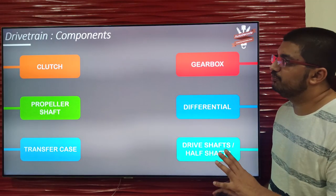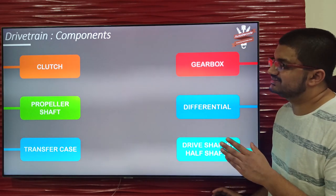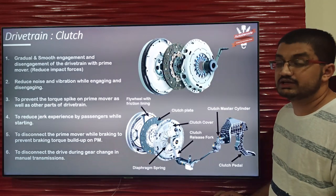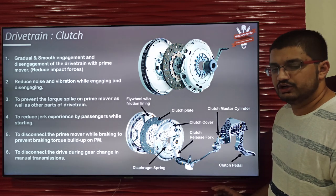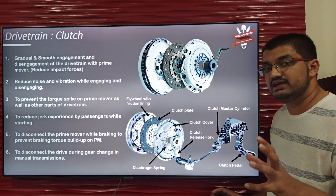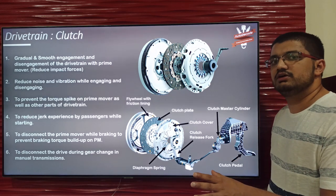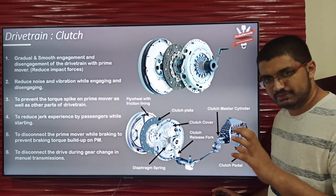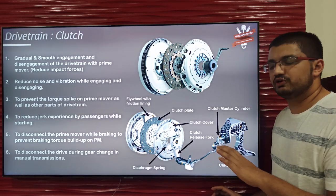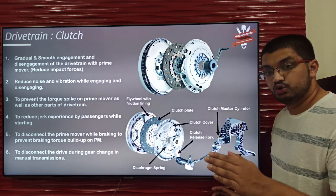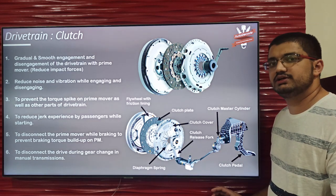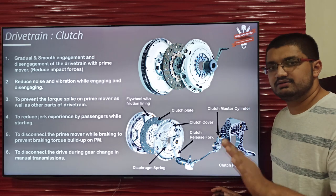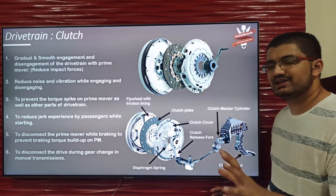These are the six main components of the drivetrain that we are going to discuss. The first component is the clutch. The main function of the clutch is engagement and disengagement of the drive with the driven wheels. We need to engage and disengage the power given by the prime mover with the driven wheels to perform multiple tasks — like slowing down while braking, changing gears in manual transmission, or giving initial thrust when starting.